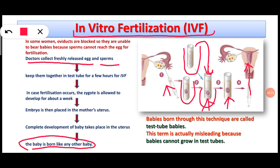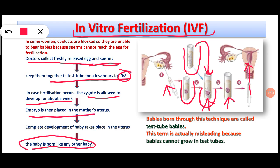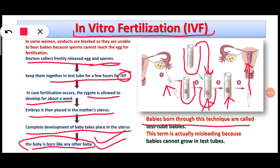To summarize the steps: egg and sperms are collected and allowed to fuse in a test tube for in vitro fertilization. The zygote is allowed to develop into an embryo for a week. Then the embryo is placed in the uterus of the mother, where the complete development of the baby takes place. Finally, the baby is born just like a normal baby. Babies born through this technique are known as test tube babies.